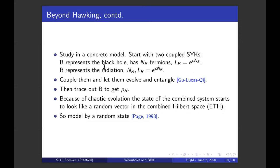So study in a concrete model to get started. Let's just take two coupled SYKs, our favorite system. We'll call one B representing the black hole and it has NB fermions. And so a Hilbert space of dimension e to the NB. R represents the radiation and it has a dimension of a Hilbert space of e to the NR. Now couple them somehow, it doesn't matter how, and let them evolve and entangle. Then trace out the B Hilbert space to get the density matrix of the R system, the radiation. Because of chaotic evolution, the state of the combined system starts to look like a random vector in the combined Hilbert space. This is the essence of this eigenstate thermalization hypothesis idea. So model it by a random state. This isn't a new idea. It goes back to Page.